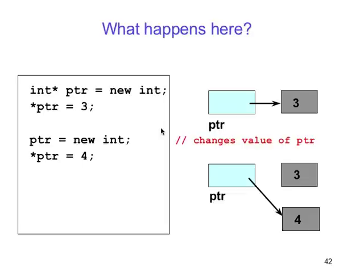What happens in this situation? We have integer PTR equal to new integer, and we follow PTR and make it equal to three. Then PTR is equal to new integer — we create a new one, follow PTR, make it equal to four. Now we have three and four; we changed the value. So we have a piece of information that's inaccessible — an inaccessible memory piece assigned with new integer. We didn't actually set PTR; we created another space. That's an example of an inaccessible object, or garbage that can't be used.